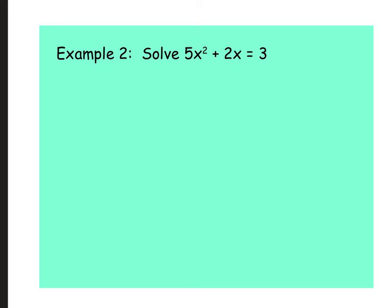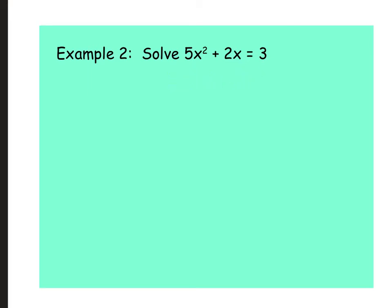Example two: 5x squared plus 2x equals 3. I'm going to start by showing the incorrect approach so you know what NOT to do. Some people factor the left side — x(5x+2) — and since it equals 3, they have something times something equals 3. But the zero product property only works when it equals zero, so please don't do it that way. We need to first subtract 3 from both sides to get 5x squared plus 2x minus 3 equals zero.